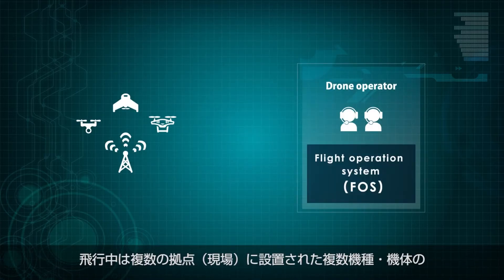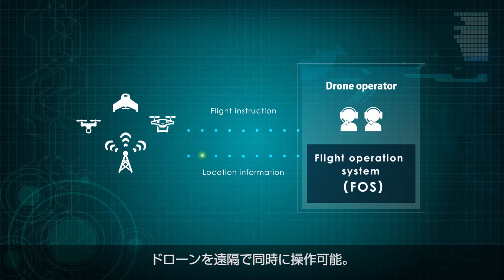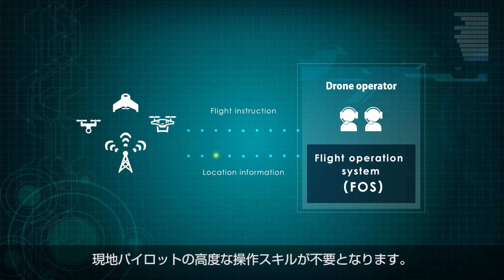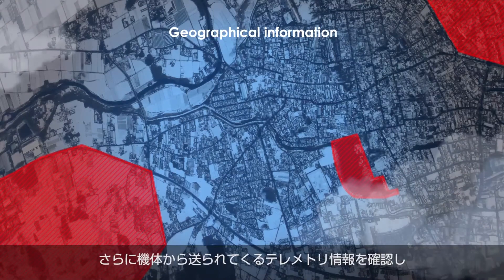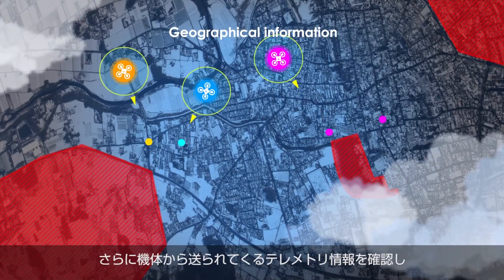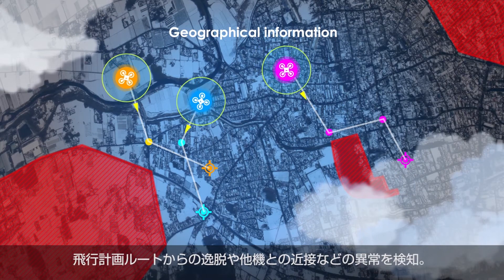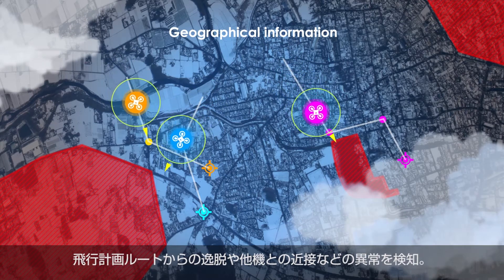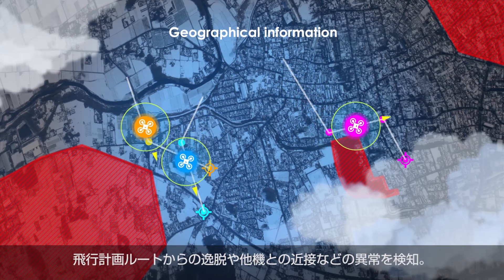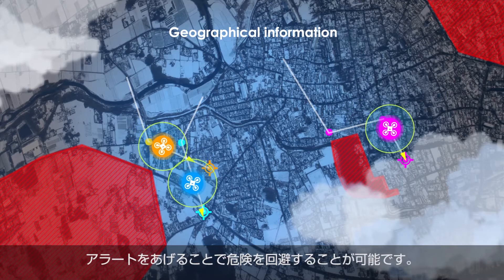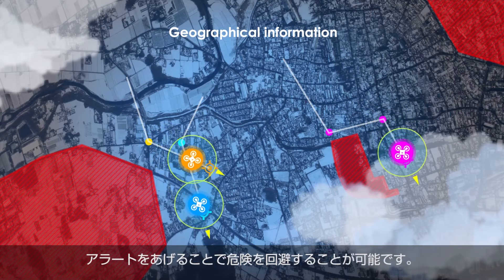During flight, it is possible to remotely control multiple numbers and models of drones placed at multiple sites. Advanced operation skills of a drone pilot are unnecessary. Furthermore, FOS checks the telemetry information sent from drones and detects anomalies, such as deviation from the flight plan route and close proximity with other drones. By raising an alert, it is possible to avoid danger.